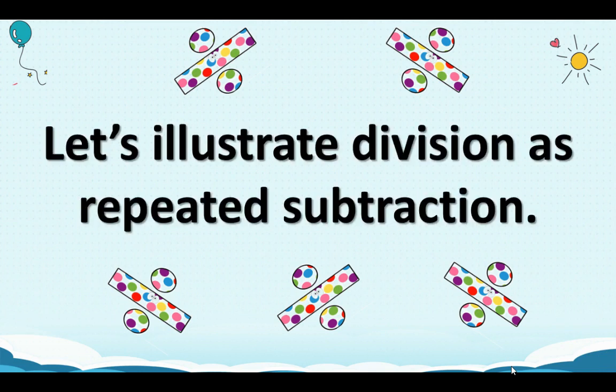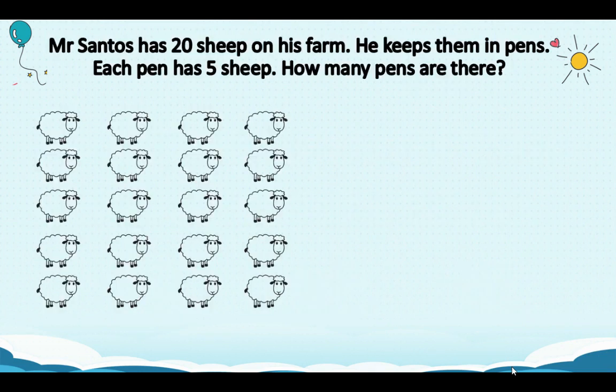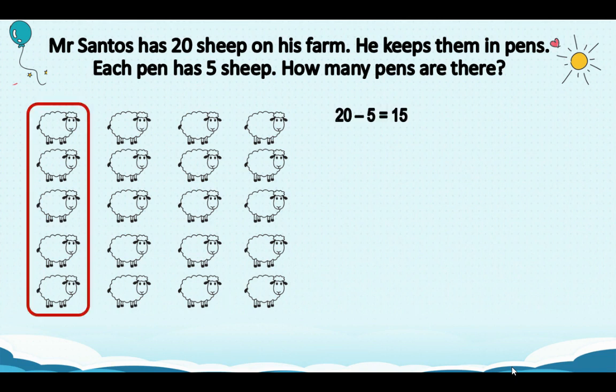Let's illustrate division as repeated subtraction. Mr. Santos has 20 sheep on his farm. He keeps them in pens. Each pen has 5 sheep. How many pens are there? We will group 5 sheep. So, 20 minus 5 equals 15. There are 15 sheep left.